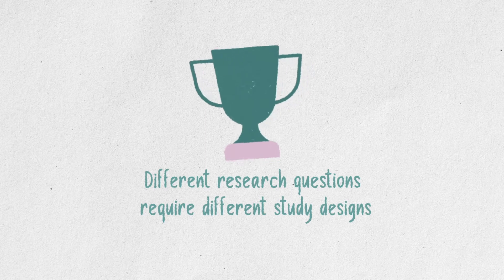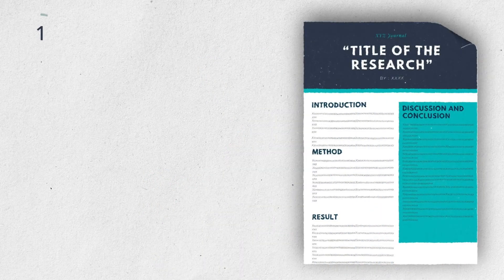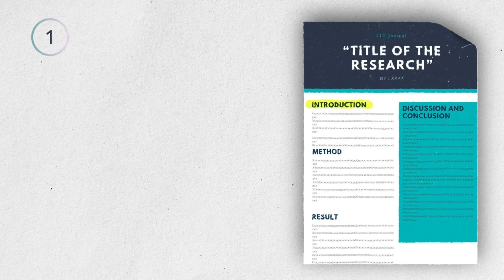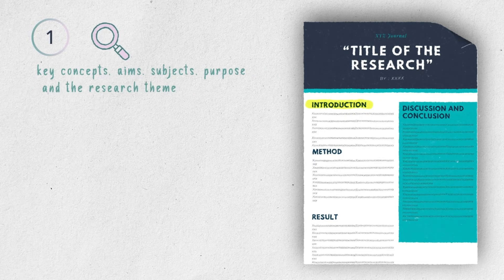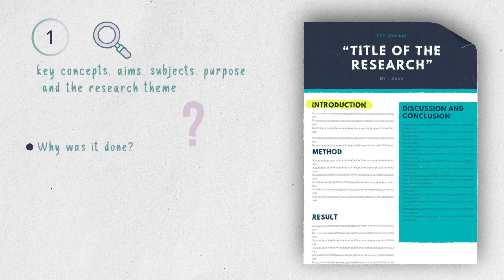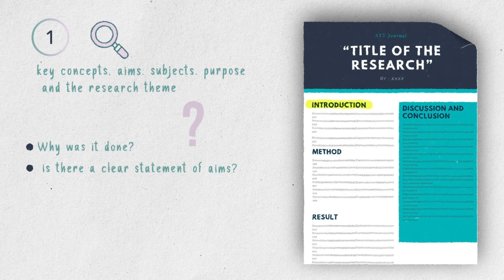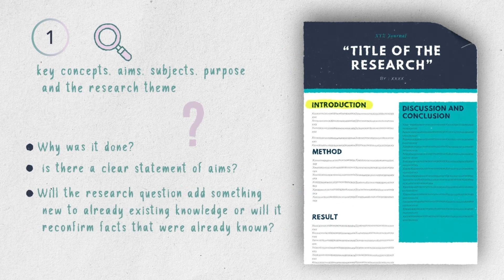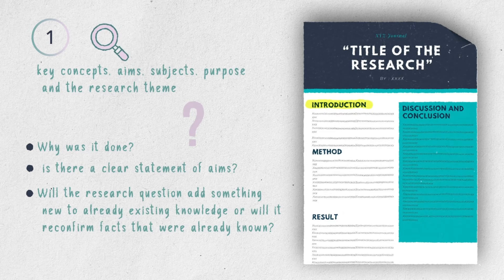Different research questions require different study designs. With that in mind, let's solve your problem in finding a good and valid article. There are several simple steps to follow when critiquing an article. Starting with Step 1: highlight the research goals in the introduction, which mainly involves identifying key concepts, aims, subjects, purpose, and the research theme. Questions to raise include: why was it done, and is there a clear statement of aims?